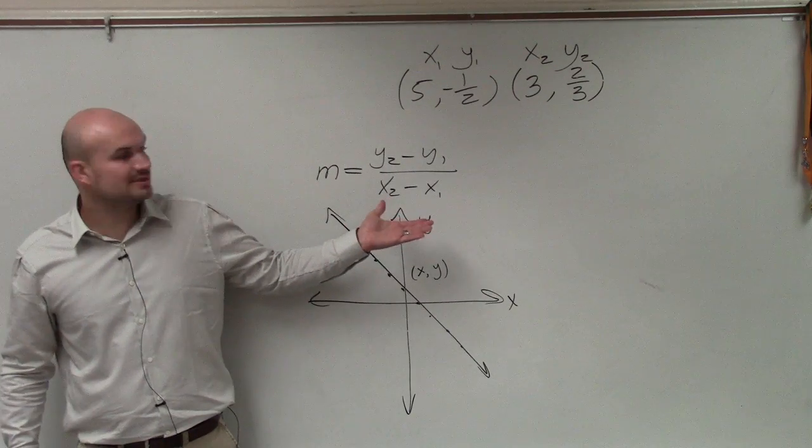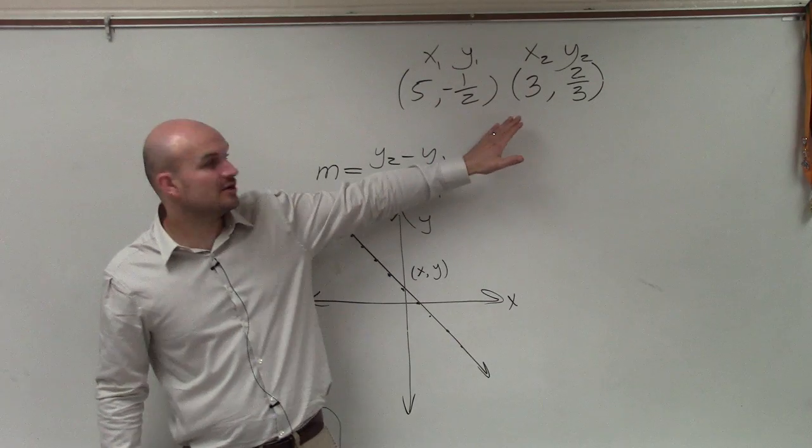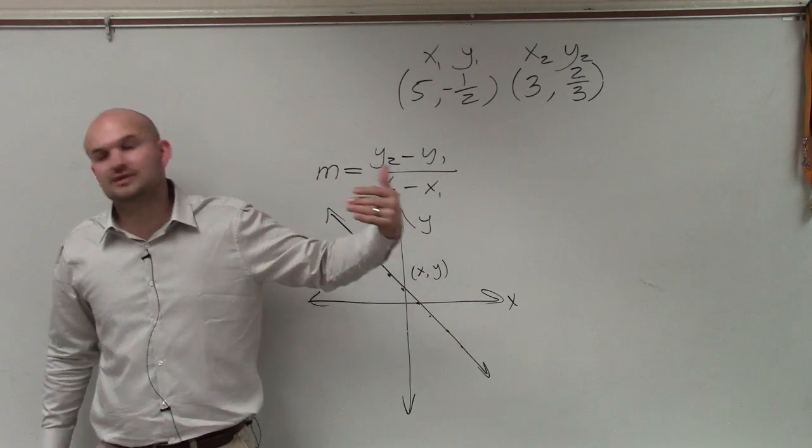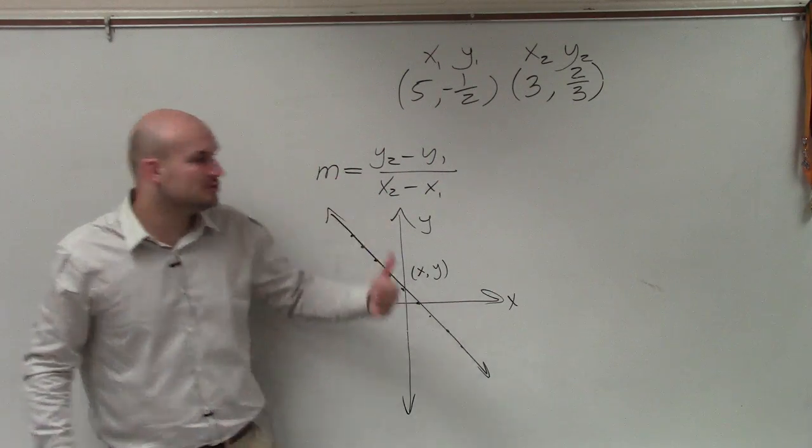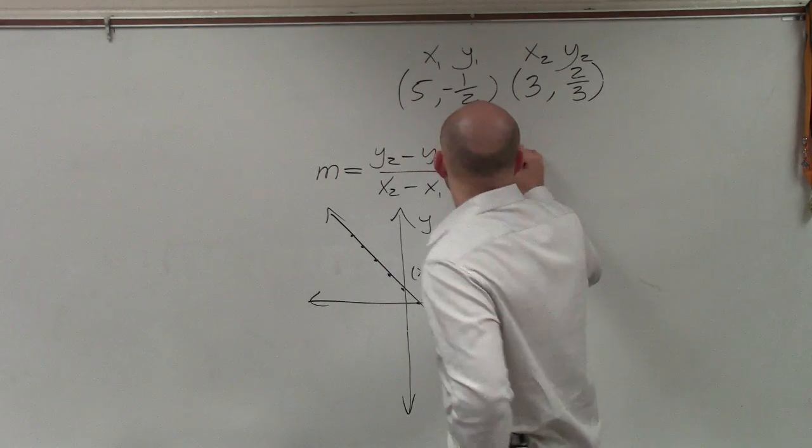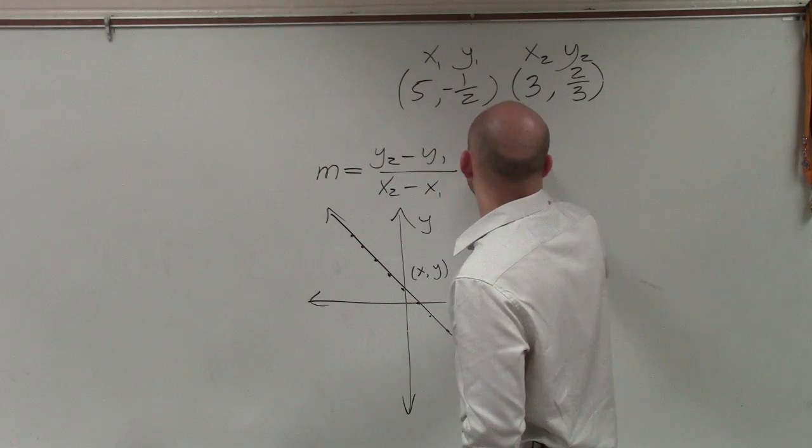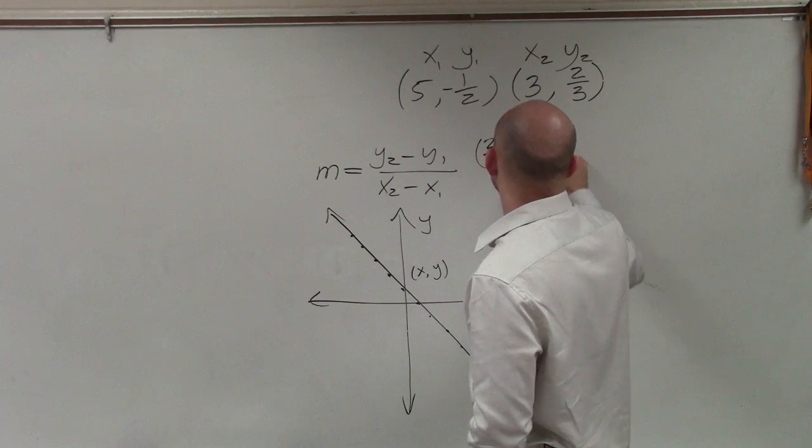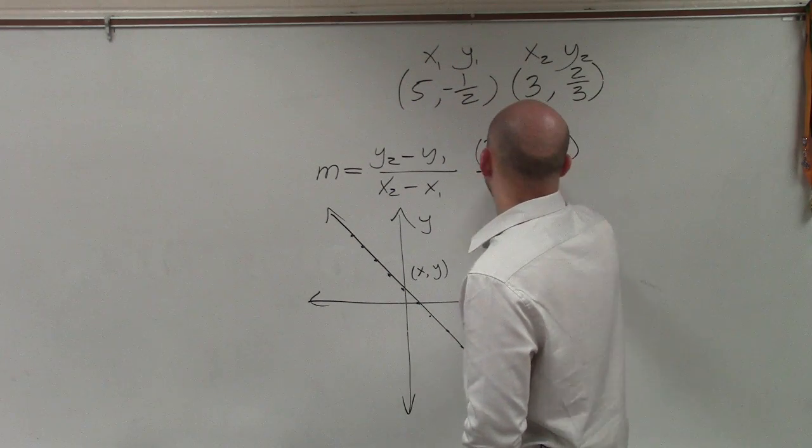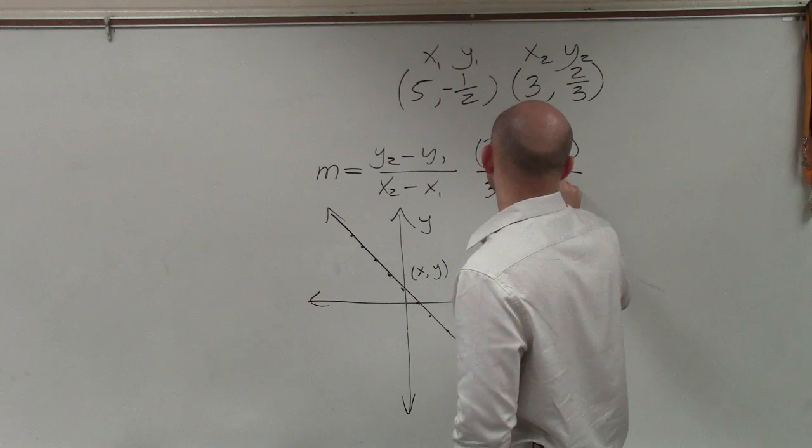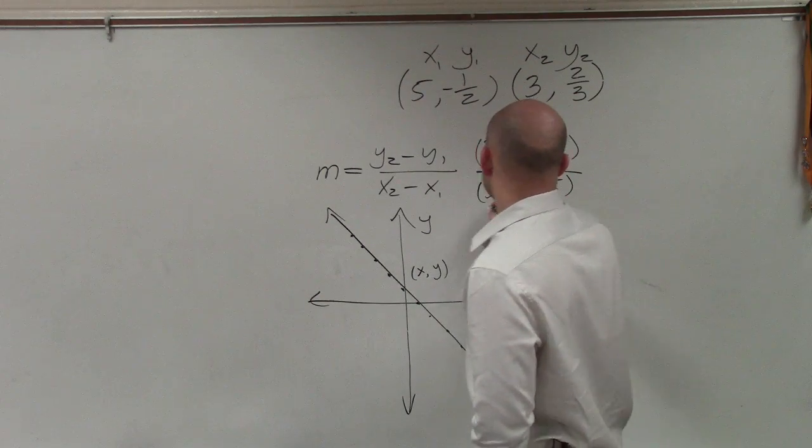Now, to evaluate the slope between these two points, I'm basically going to plug them in. And please make sure, ladies and gentlemen, when you plug them in, that you utilize parentheses. So I have 2 thirds minus negative 1 half all over 3 minus 5.